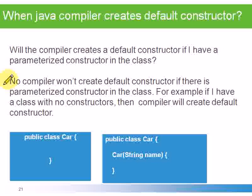And coming to the second example, public class Car with Car(String name). In this example, we have a parameterized constructor which accepts name. So compiler won't create any constructor for this class.